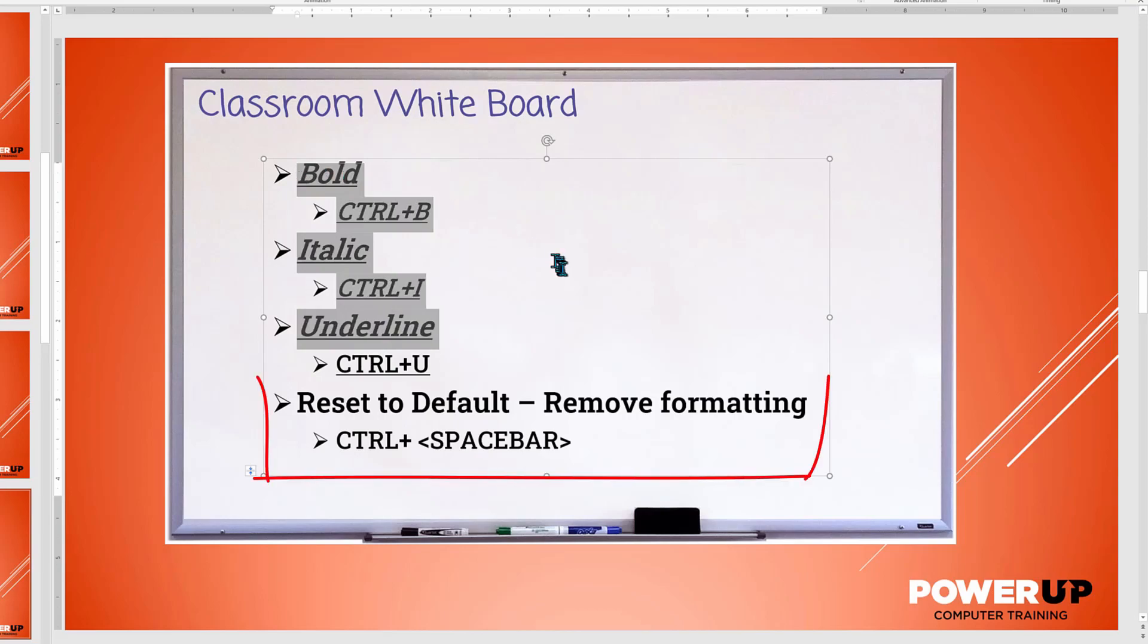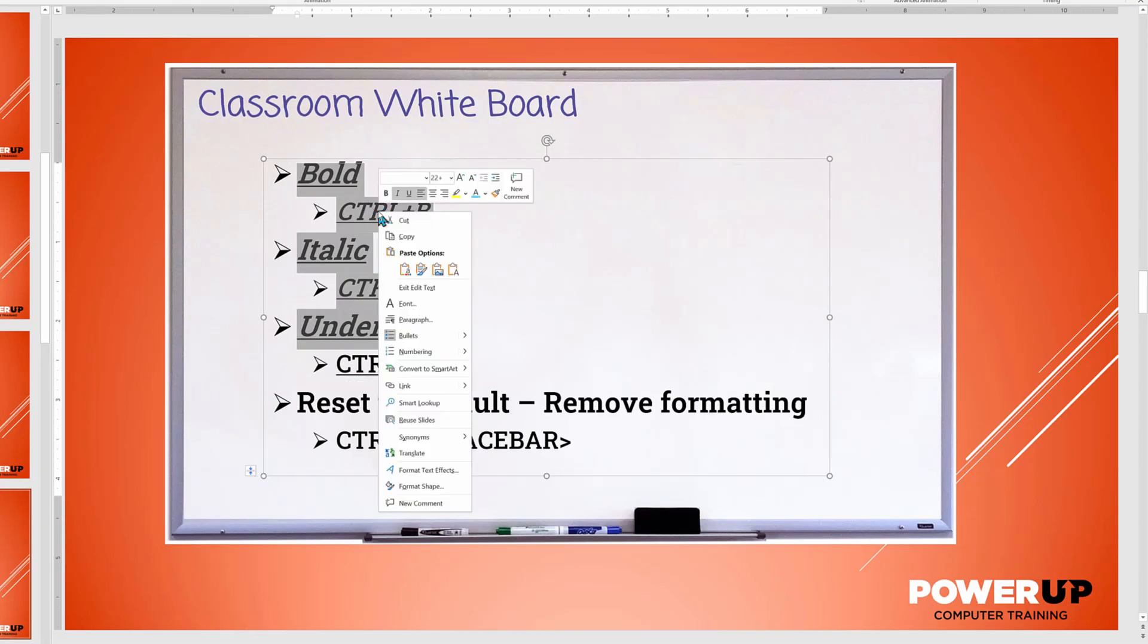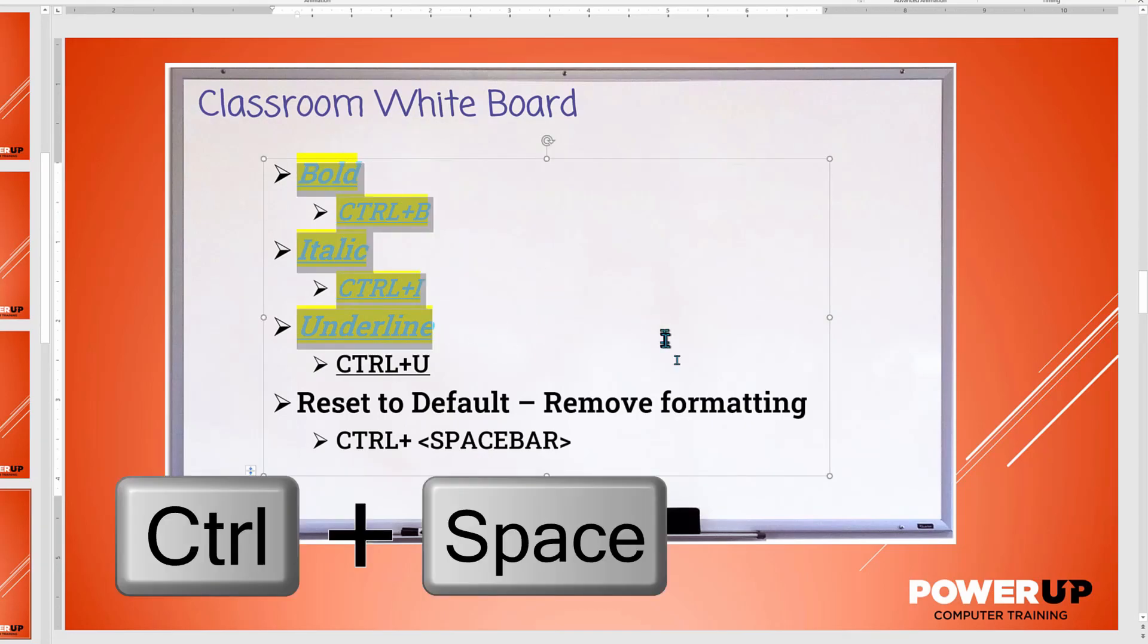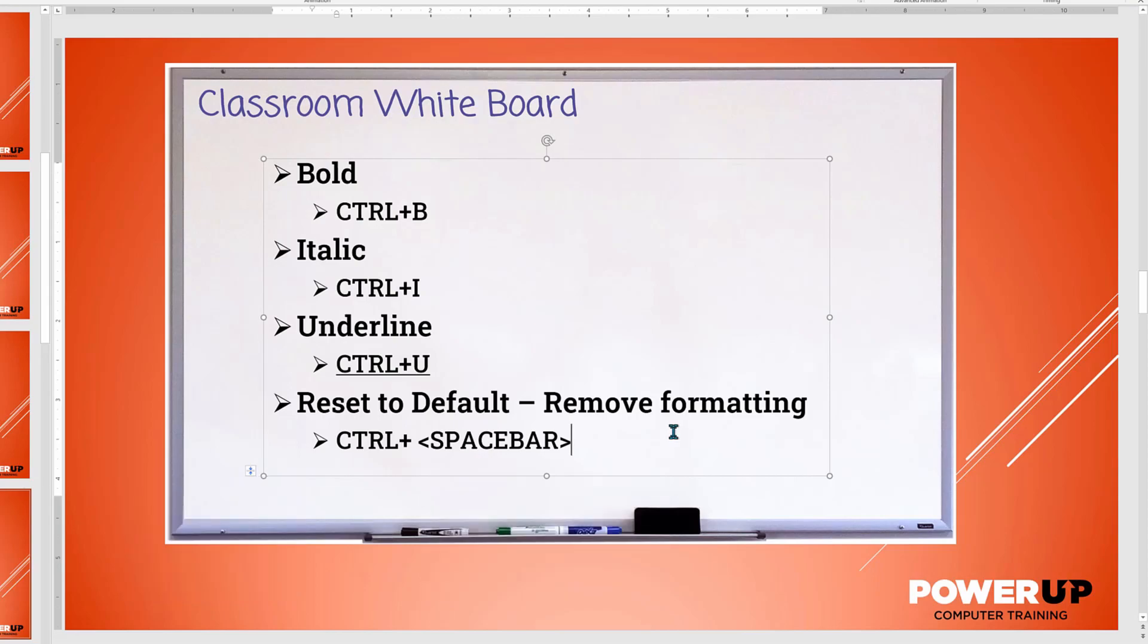The last formatting command is really an unformatting command, meaning it will remove any text formatting and return the text to the original standard look. Let's change the text I have selected by making it a blue font with yellow highlighting. To return the text back to my standard black, I just highlight and hold down control plus spacebar to remove the formatting.